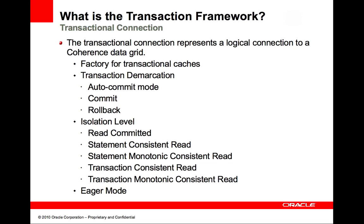Statement consistent read isolation provides statement-scoped read consistency. This isolation level guarantees that all the data read by a single operation comes from a single point in time when the statement began execution. Statement monotonic consistent read isolation is the same as statement consistent read isolation except that all reads are guaranteed to be monotonic. This means that a read is guaranteed to return a version that is equal to or greater than any version that was previously encountered while using the connection.